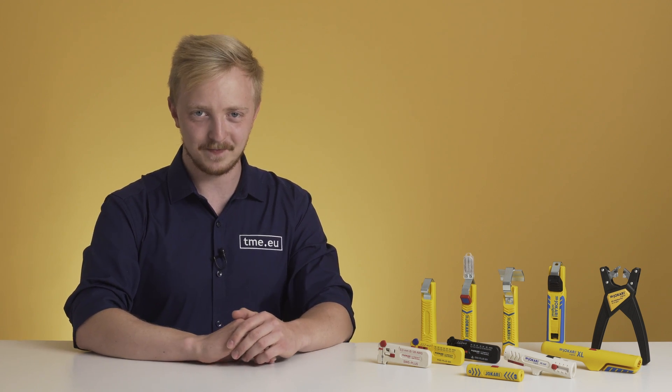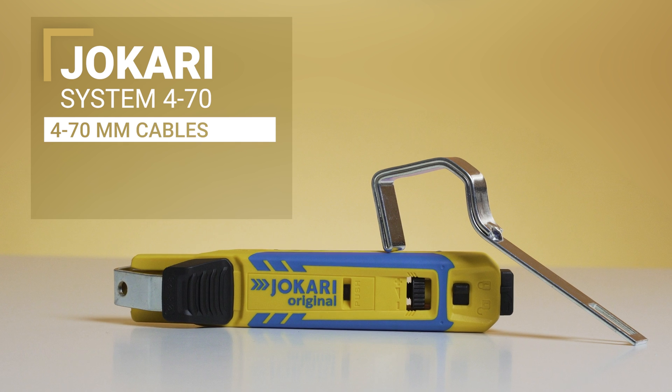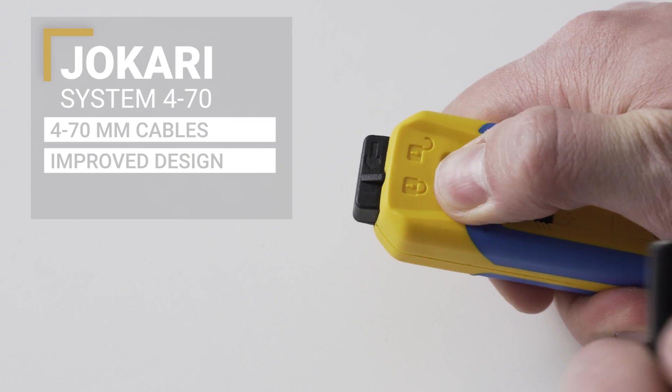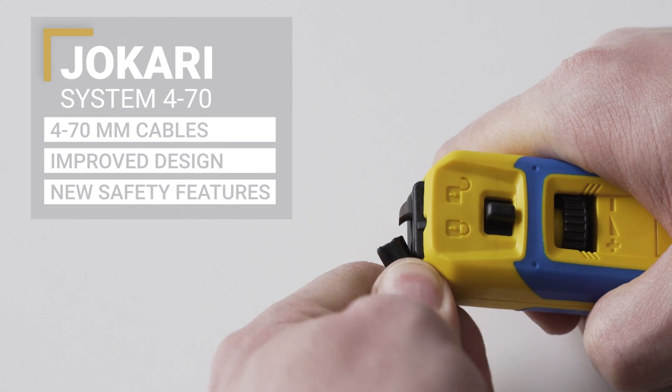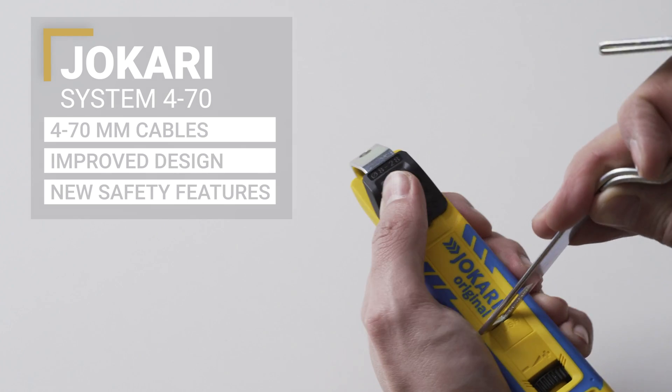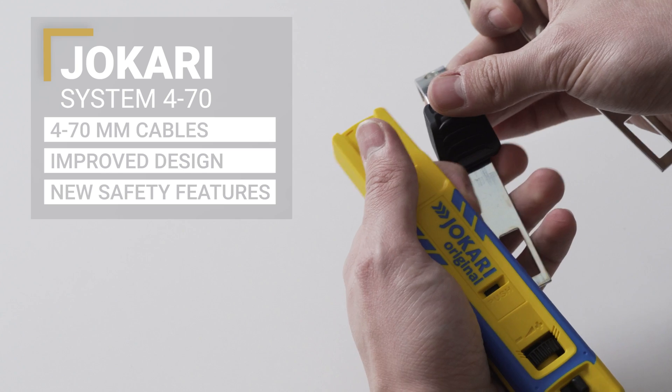Since then it's been improved to achieve the highest efficiency. Now on TMI's offer you can find the most advanced version of Jokari's stripping knife, the modular system 470. It combines safety features like a self-retaining blade or auto-locking mechanism with the flexibility of interchangeable brackets. Now you can easily switch between different wire diameters on the go.